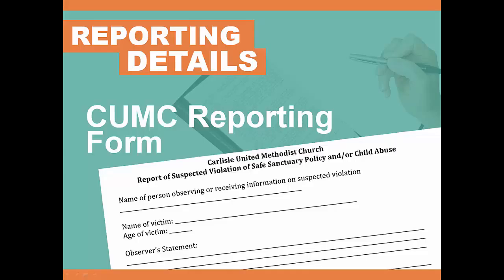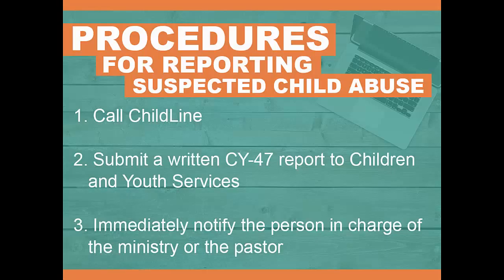The pastors will reach out with pastoral support to all those involved in the situation, leaving the investigation in the hands of Children and Youth Services. The person making the report must complete the form. If there are questions completing the form, please speak with the person in charge of the ministry or a pastor. If the suspected abuser is an employee or volunteer, after notifying Childline, please talk to the pastor immediately. The pastor will then assist with the correct notifications. If the suspected abuser is a pastor, after notifying Childline, please talk immediately to the chair of the leadership council. PA law and church policy mandate that this three-step procedure be followed.